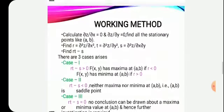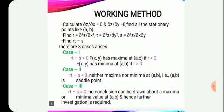Now what is the working method? We have understood graphically and conceptually. Now we will see the working method — if we want to calculate the maxima and minima, then how do we calculate it? We have the function z as the dependent variable.